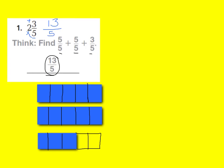If I show you a model of 2 and 3 fifths, you can see I have my 2 wholes cut into fifths, and then 3 out of 5 pieces shaded for my 3 fifths. I can also see my improper fraction — counting all the shaded parts: 1, 2, 3, 4, 5, 6, 7, 8, 9, 10, 11, 12, 13 pieces shaded out of fifths.